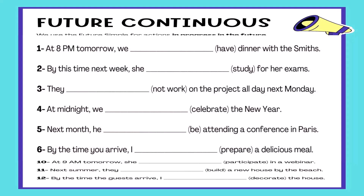Number four: At midnight, he ___ (attend) a conference in Paris. Number five: Next month, he ___ (attend) a conference in Paris. Number six: By the time you arrive, I ___ (prepare) a delicious meal.